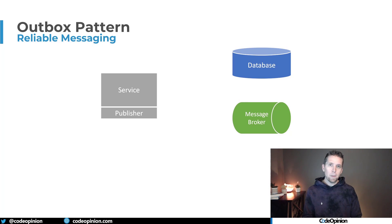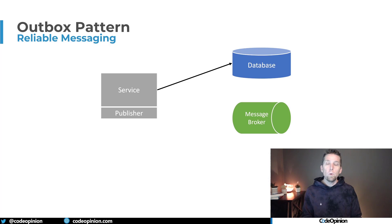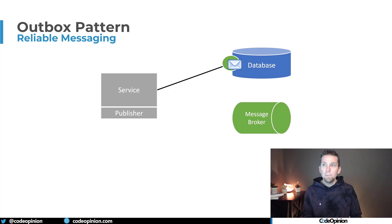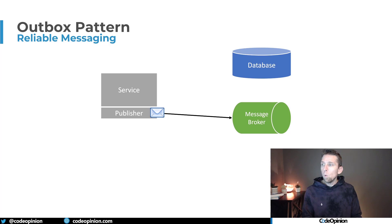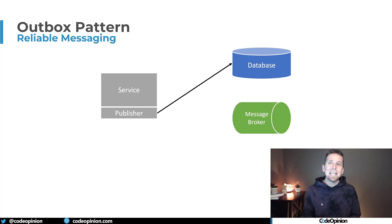Another solution is the outbox pattern. What happens here is that you save your state and your event within the same atomic operation - the same transaction in your database. In the example of creating our order, we save the order data to our database, but instead of publishing the event right away, we serialize that event and persist it within the same transaction in a specific table or collection. Then a scheduler - a publisher - looks at the database for those persisted events, pulls them out, and publishes them to the message broker. Once successfully published, we reach back out to the database to remove or update that record to indicate it's been published.